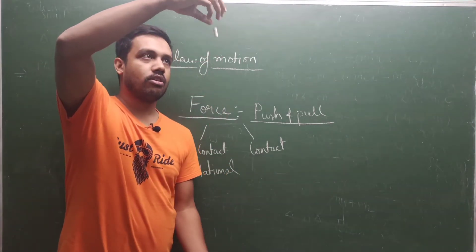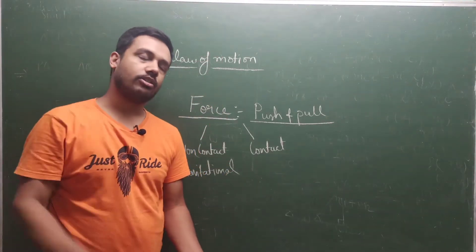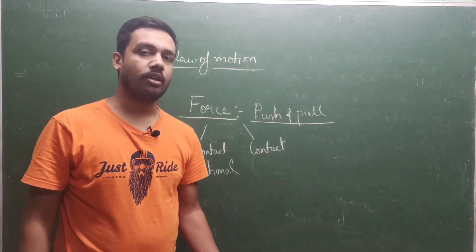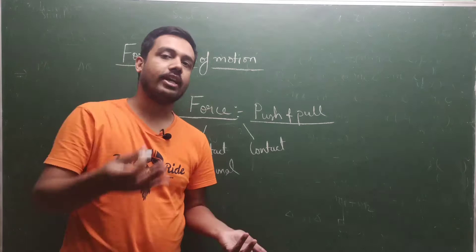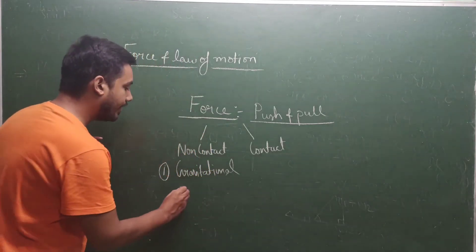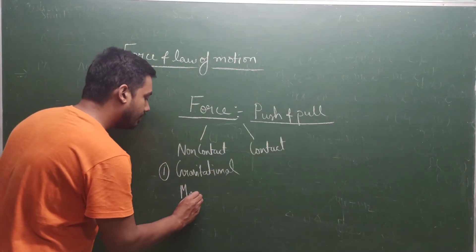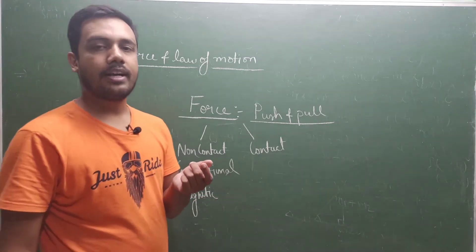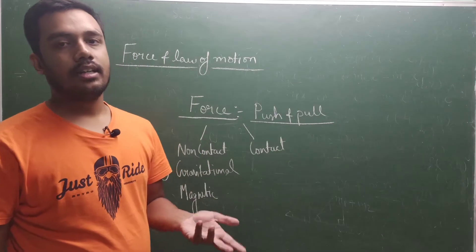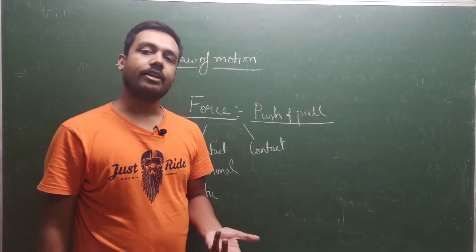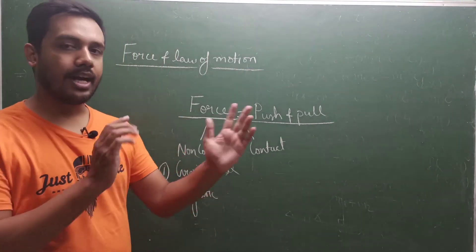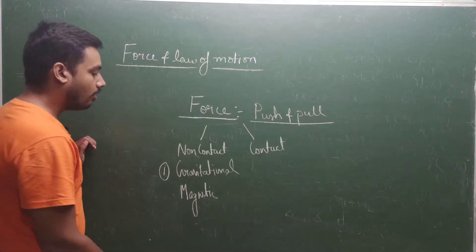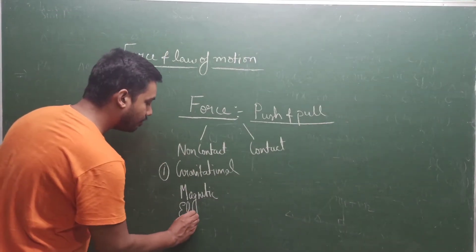I am holding this chalk. I am leaving it, the chalk is going down. The other type of non-contact force is magnetic force. You bring a small piece of iron near a magnet, the iron will get attracted to the magnet. Another type is electrostatic force.